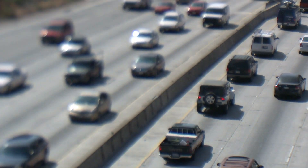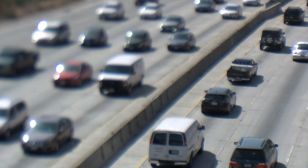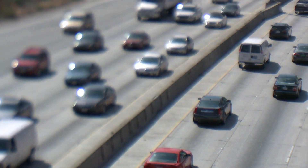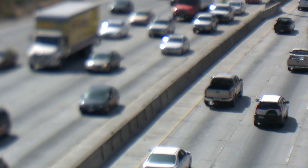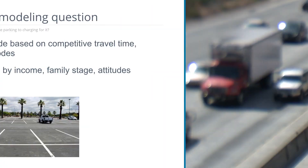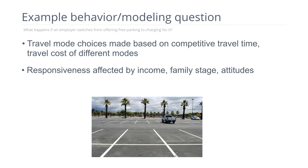That cost is a complex element that includes out-of-pocket money costs, time costs, uncertainty costs, and so on. Also, that responsiveness to price might vary by income, family stage, or attitudes. That's an example of a question that a transportation model might be employed to answer.